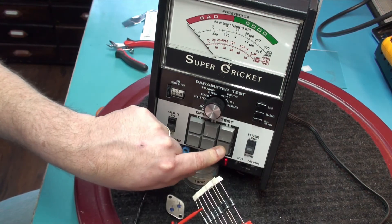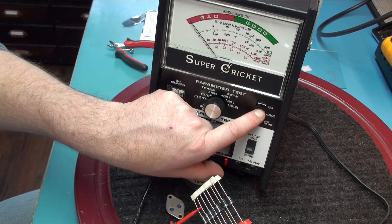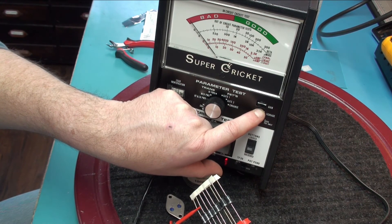Then we push 3B and leakage and it should not show barely anything. Which it does not. And that is how we test the diode.